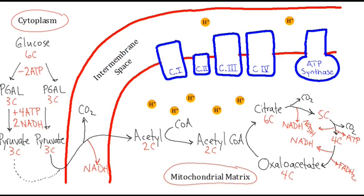Recapping from the beginning: glucose enters the cell and in the cytoplasm undergoes glycolysis — glucose, a six-carbon molecule, is broken down, requiring two ATP to work. The products, two PGAL molecules each of three carbons, undergo conversion: each PGAL converts into a pyruvate molecule through a rearrangement — still three carbons — producing four ATP molecules and two NADH molecules. So at the end of glycolysis, we have a net plus two ATP, and two NADH electron-carrying molecules.